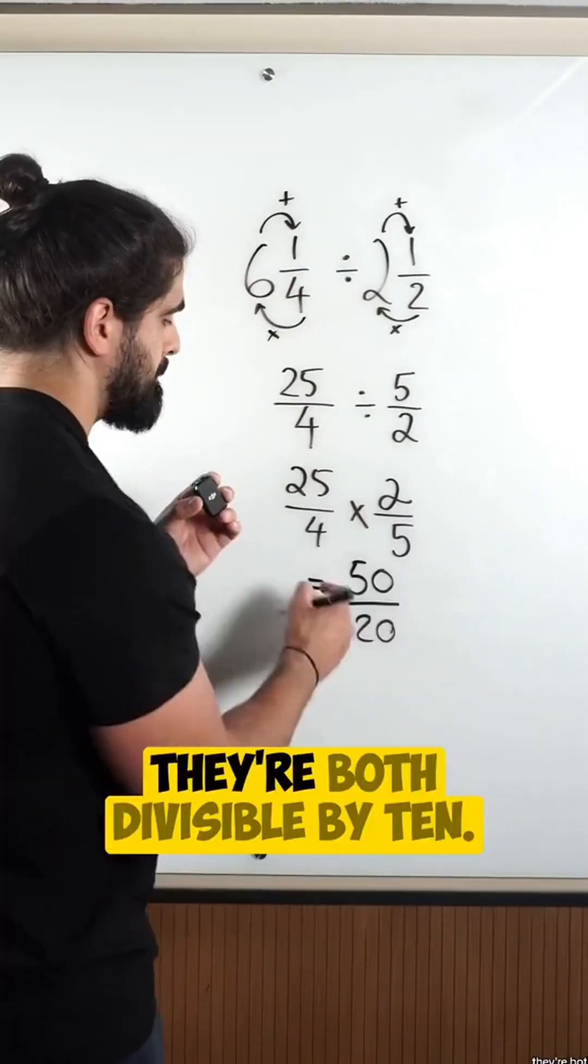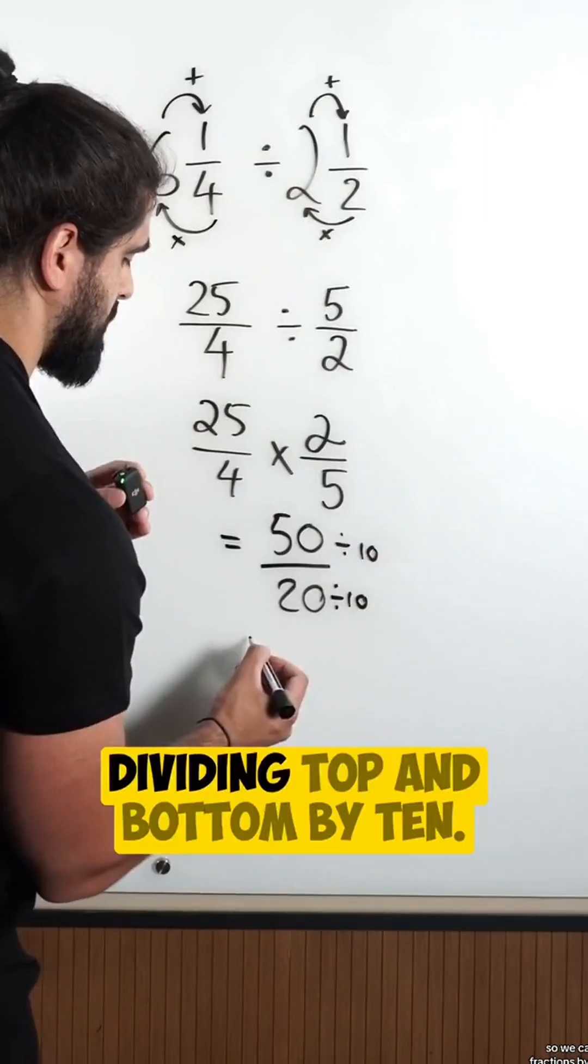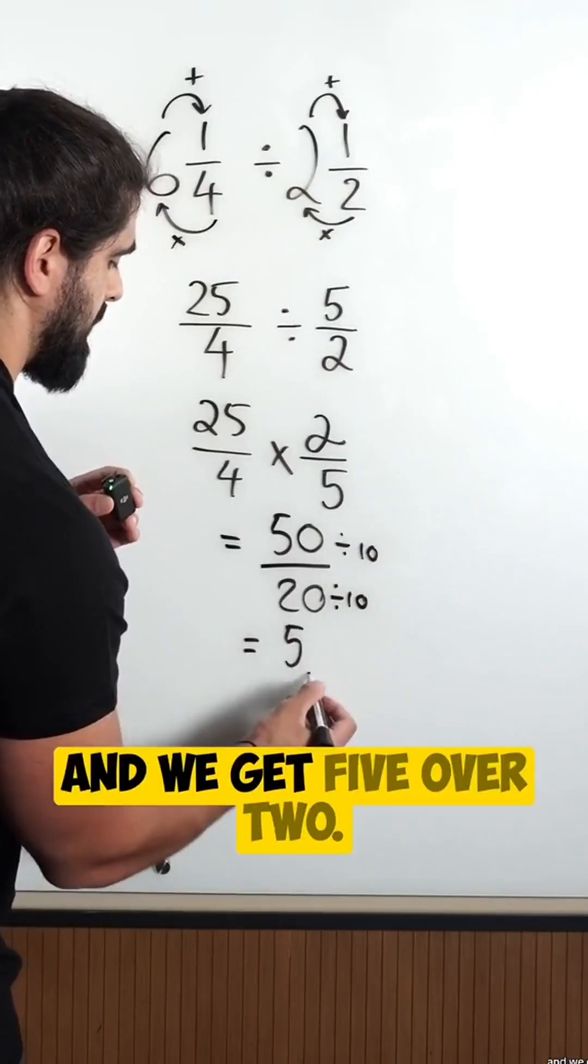Do you notice anything? They're both divisible by 10. So we can simplify the fractions by dividing top and bottom by 10, and we get five over two.